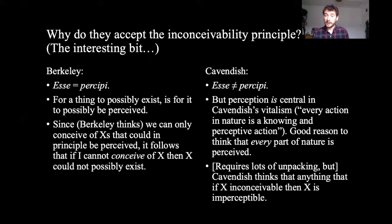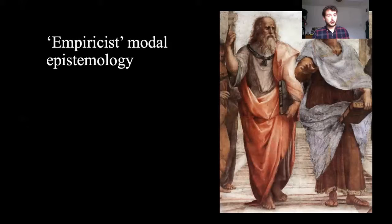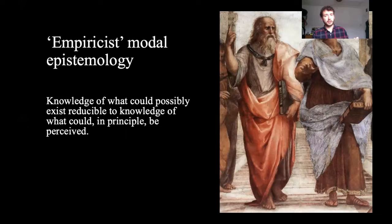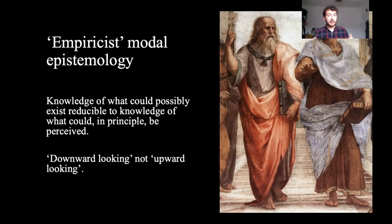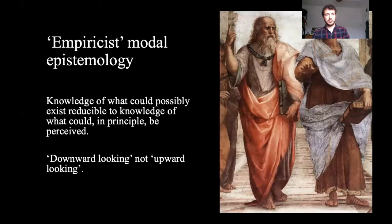What comes out of this is what we might call an empiricist modal epistemology. For both thinkers, knowledge of what could possibly exist is reducible to knowledge of what could in principle be perceived. To borrow an analogy from the famous Raphael painting, Cavendish and Berkeley — when it comes to modal epistemology — are downward looking and not upward looking. They're not interested in a priori truths; they're interested in perception and its connection to existence. Thank you very much. I look forward to your questions.